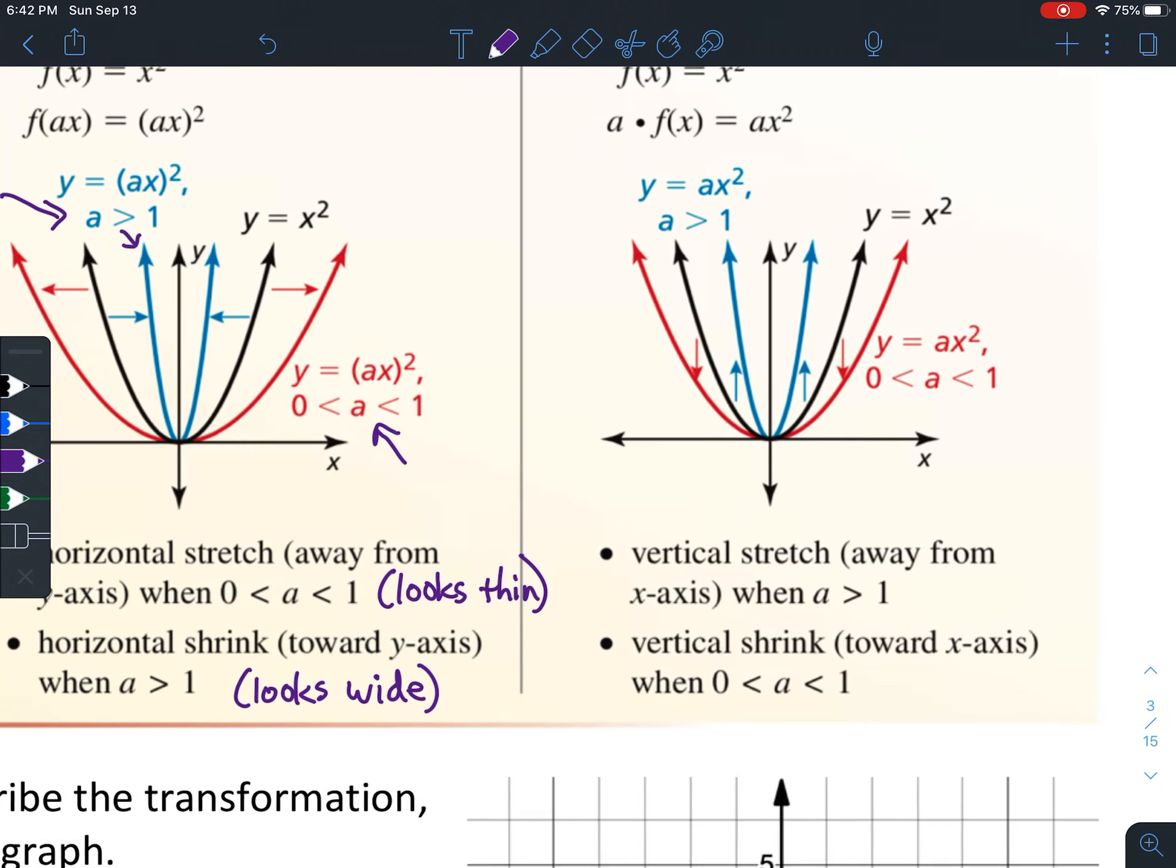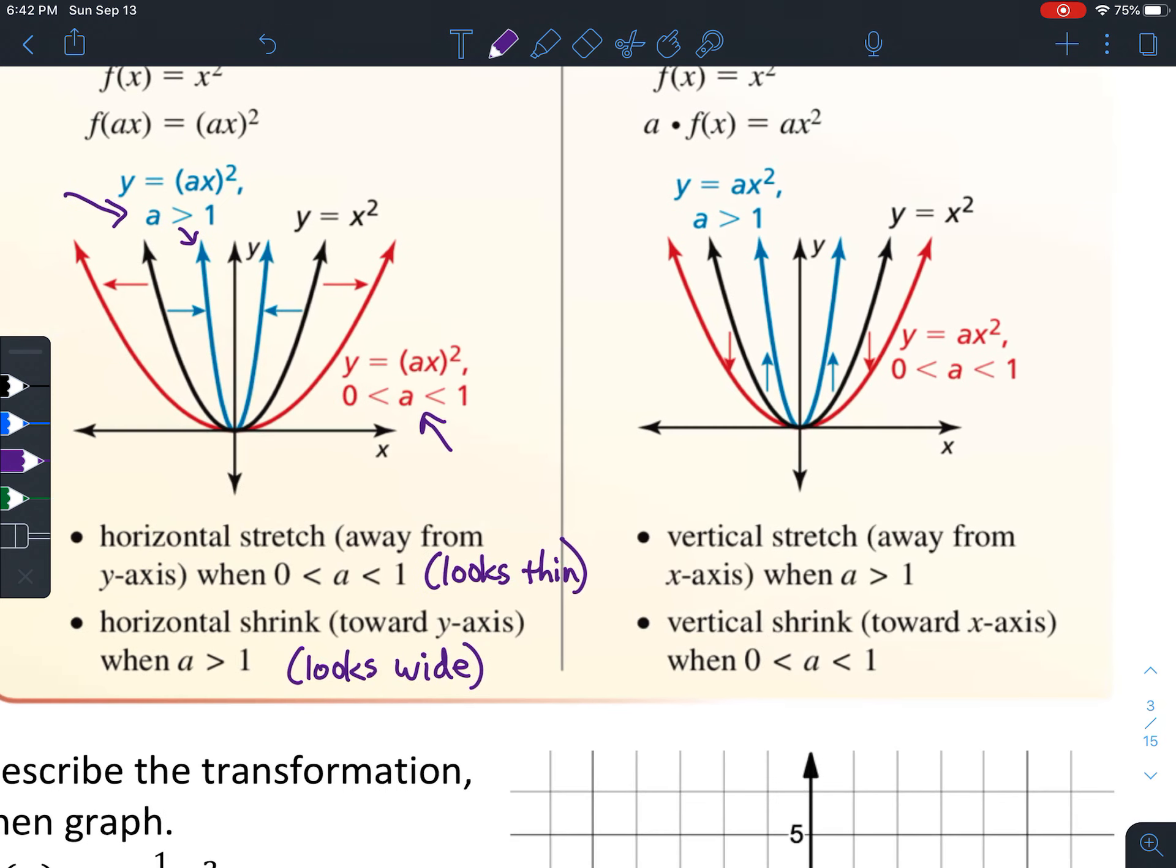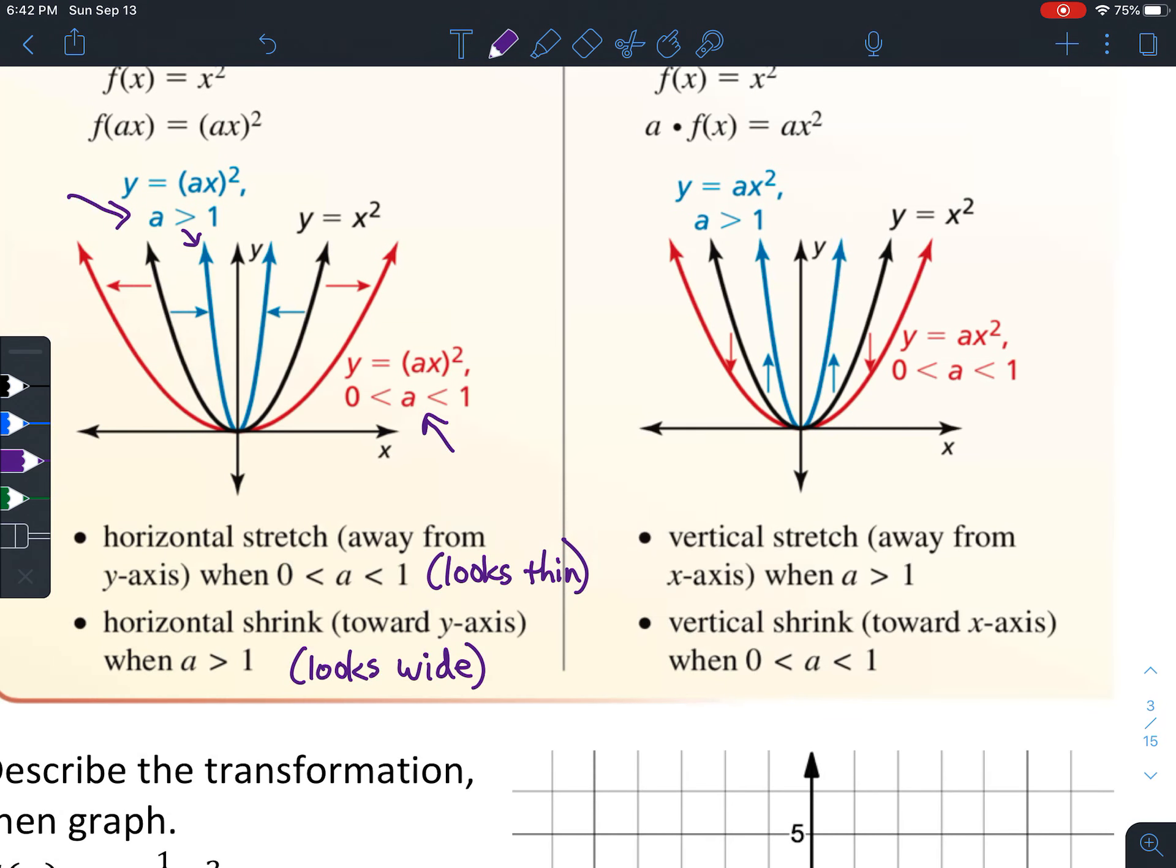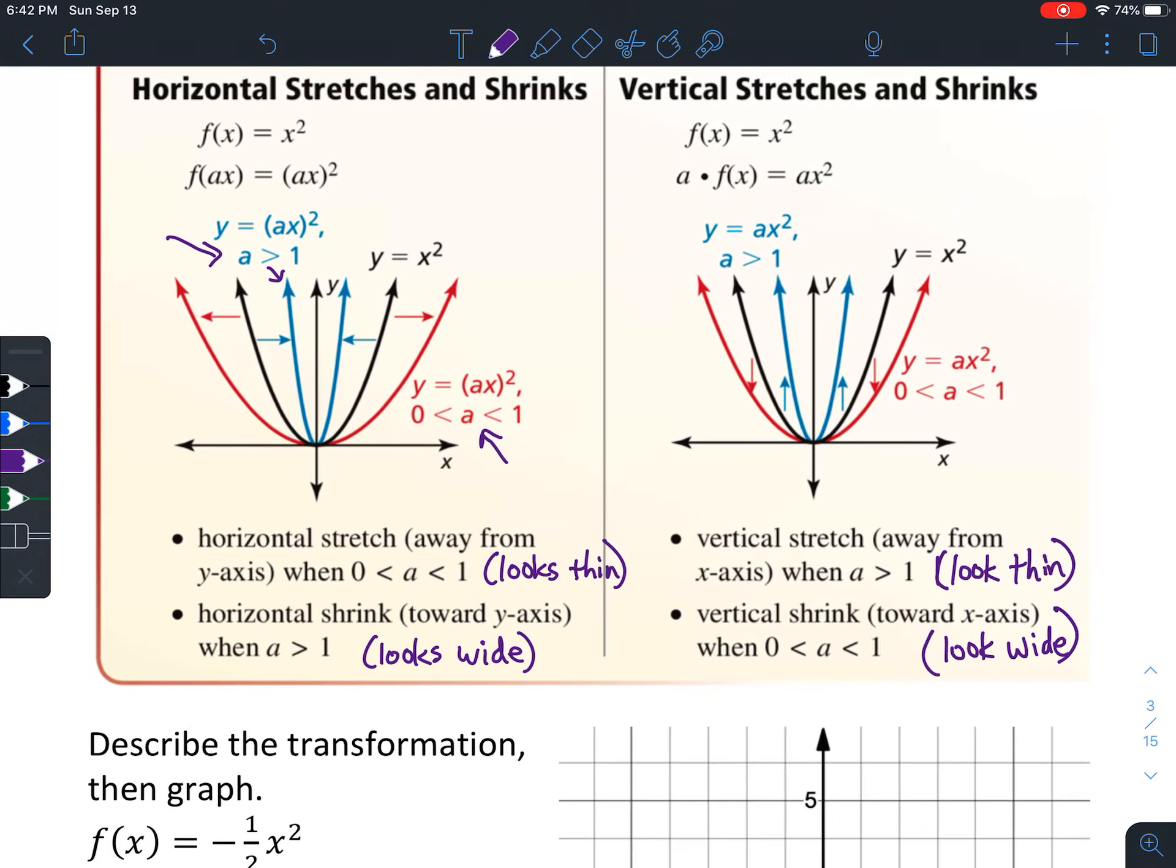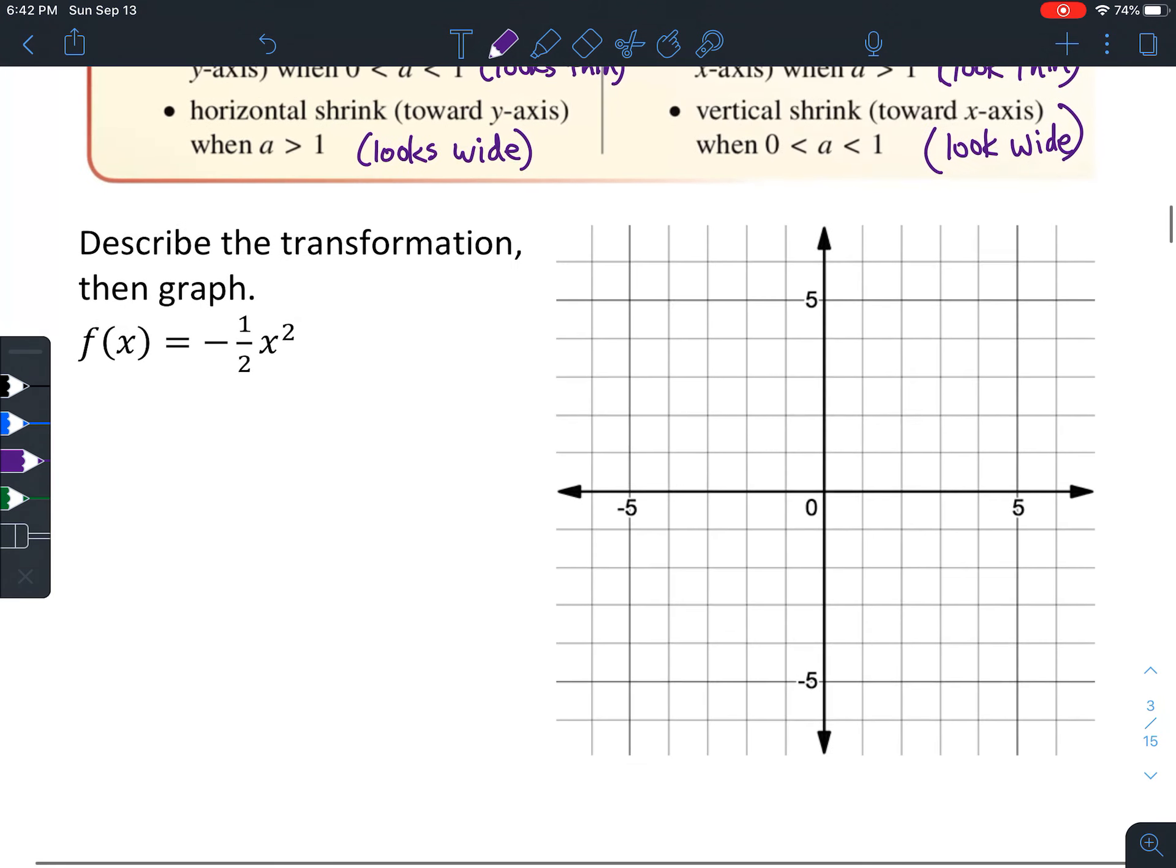And then a vertical stretch and shrink, kind of the same thing. So when it's greater than 1, it's going to still look thin. And when it's between 0 and 1, it's going to look wide.